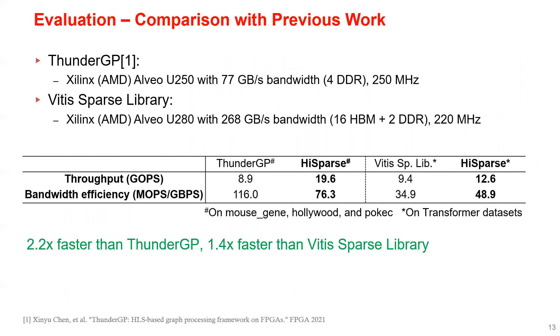We also compare HiSparse with previous work on FPGAs. The two baselines are ThunderGP targeting a DDR FPGA, and the Vitis Sparse Library running on the same platform as HiSparse. So we are 2.2x faster than ThunderGP and 1.4x faster than the Vitis Sparse Library.